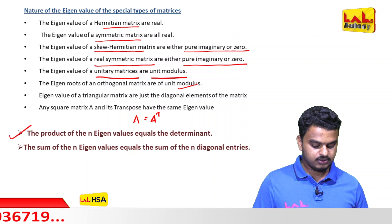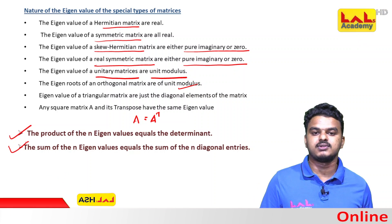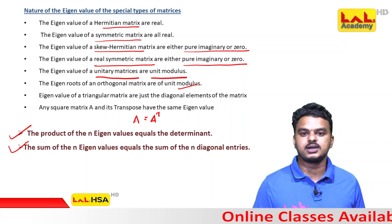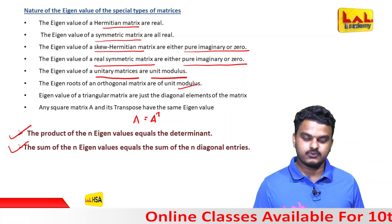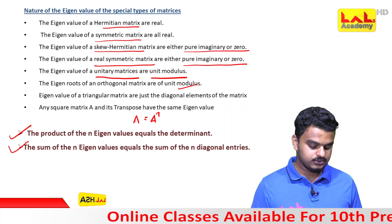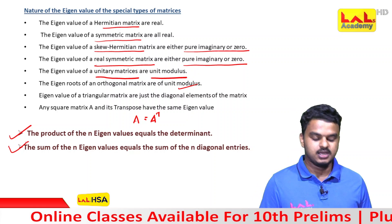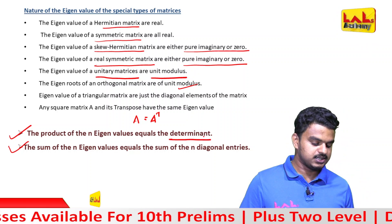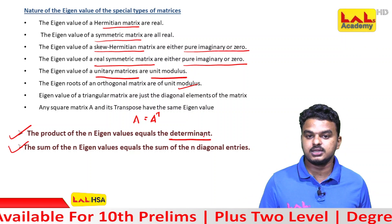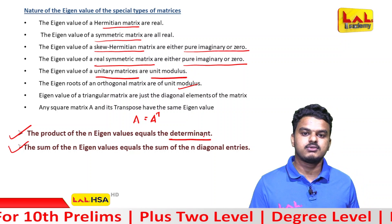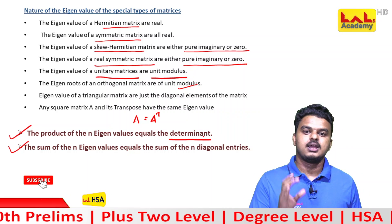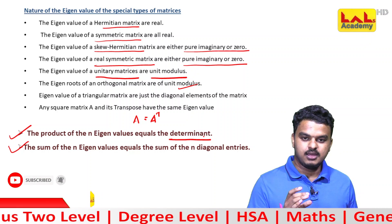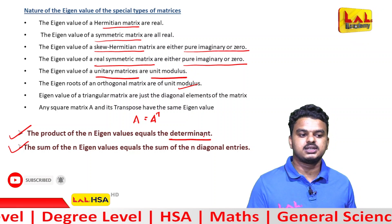Product of eigenvalues and sum of eigenvalues — what is the eigenvalue? The product of eigenvalues equals the determinant of the matrix. What is the determinant? The product of eigenvalues equals the determinant of that matrix.